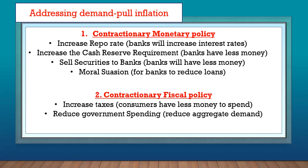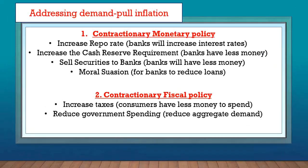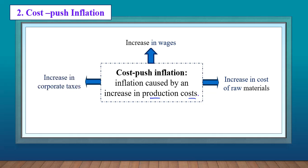The second type of inflation is cost-push inflation. As its name suggests, this inflation is caused by high production costs. If companies have high production costs, they have no choice but to increase prices in order to survive. Causes include increases in wages, increases in the cost of raw materials, increases in corporate taxes, and a decrease in productivity — if employees are not productive, the company must increase prices to make money.